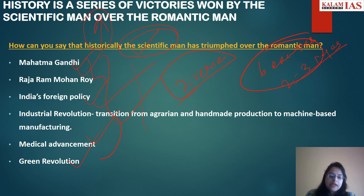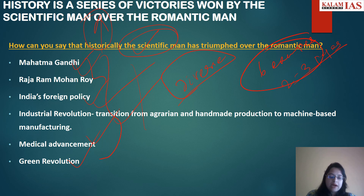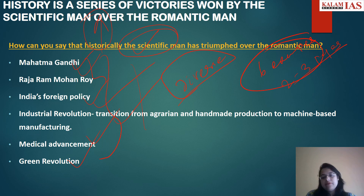Then you can talk of Raja Ram Mohan Roy — how Indian society was plagued with social evils like the Sati practice, practiced by romantic men devoid of any evidence, facts, or logical reasoning, just going by ideologies. But leaders like Raja Ram Mohan Roy adopted scientific practices because of their scientific temper, and despite facing criticism and hurdles, they were successful in uprooting those social evils of the time.